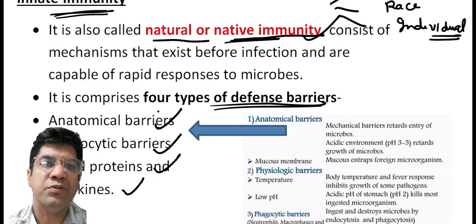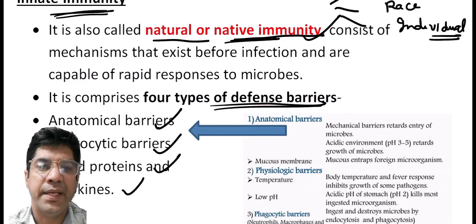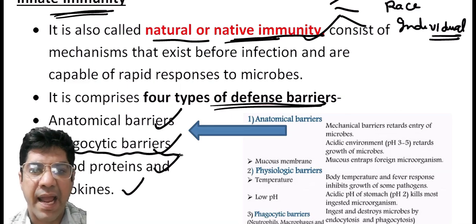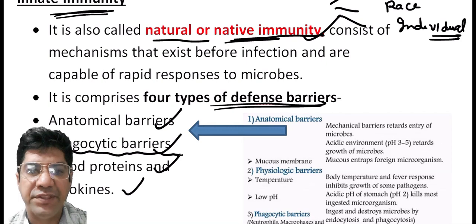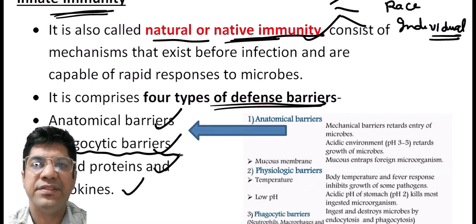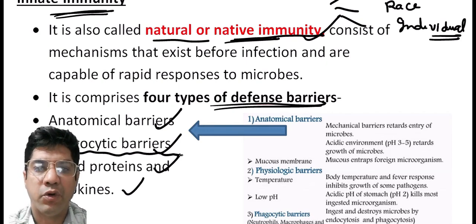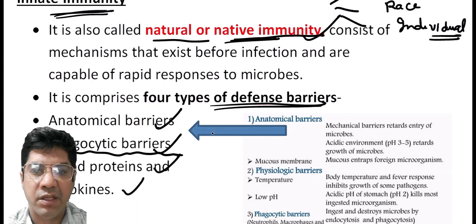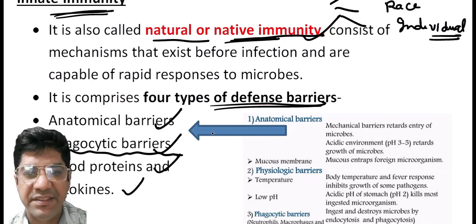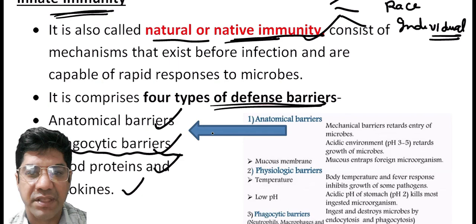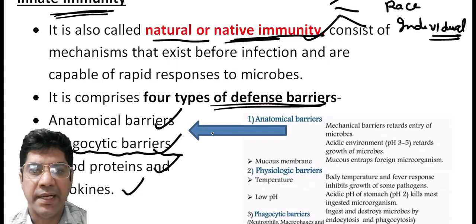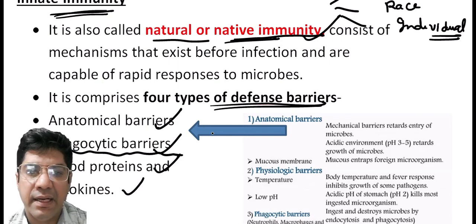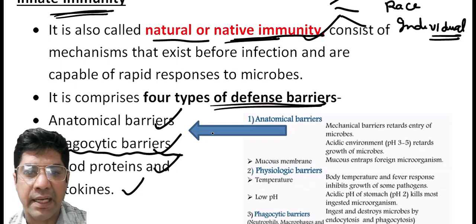The second is the phagocytic barrier — it involves the action of phagocytic cells like macrophages, neutrophils, and dendritic cells. These are specialized immune cells capable of phagocytosis, meaning they can engulf and digest foreign invaders like bacteria and other microorganisms.